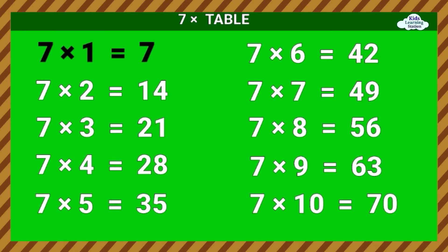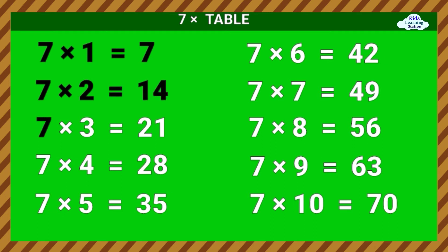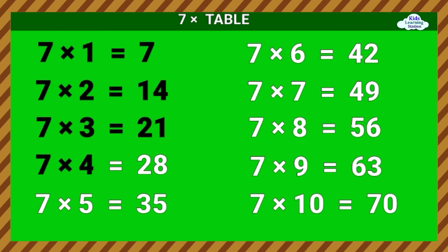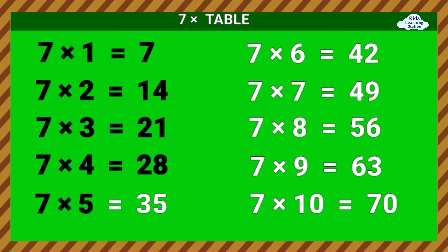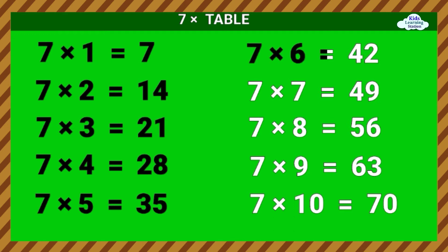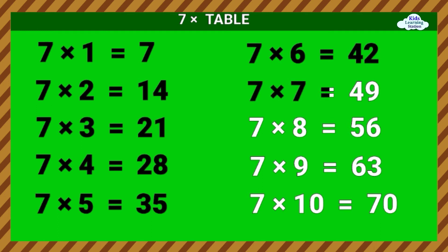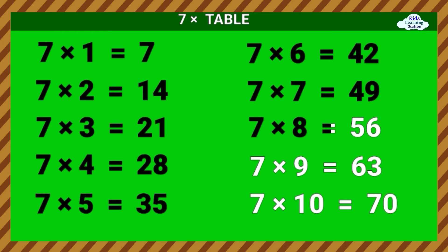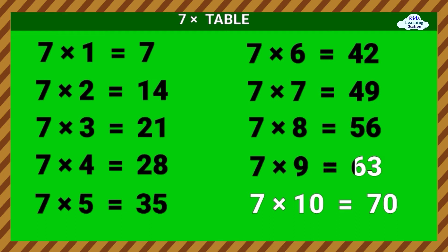7 times 2 equals 14. 7 times 3 equals 21. 7 times 4 equals 28. 7 times 5 equals 35. 7 times 6 equals 42. 7 times 7 equals 49. 7 times 8 equals 56. 7 times 9 equals 63.